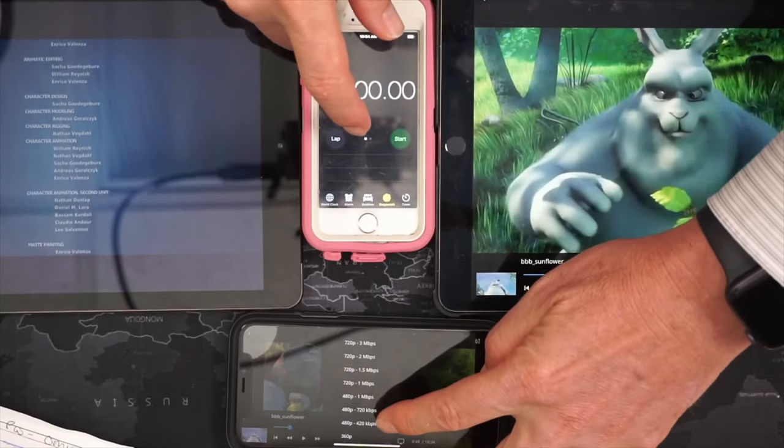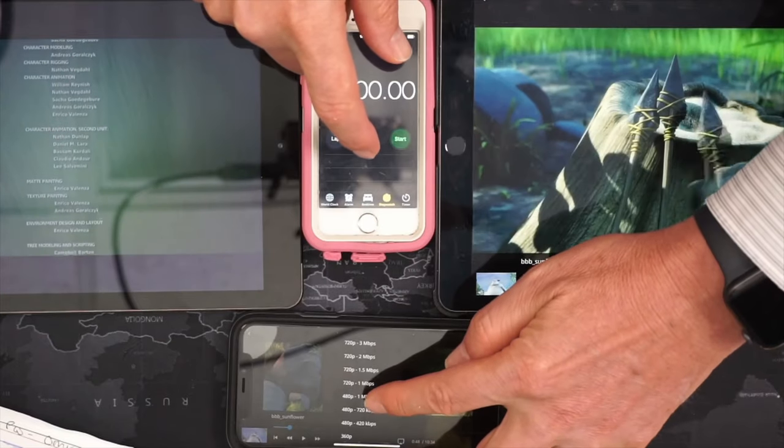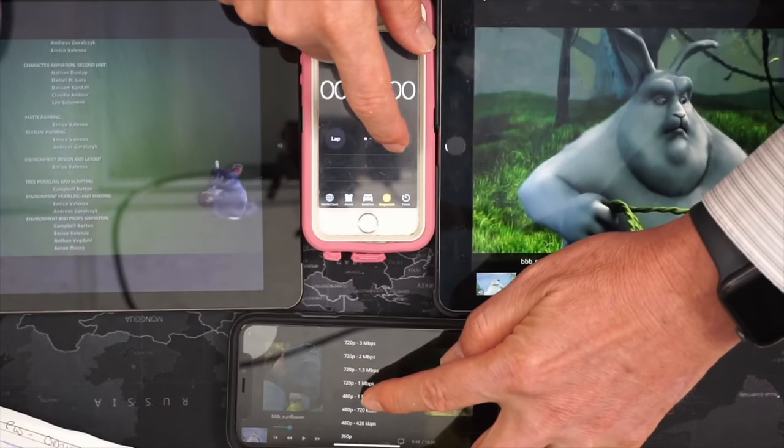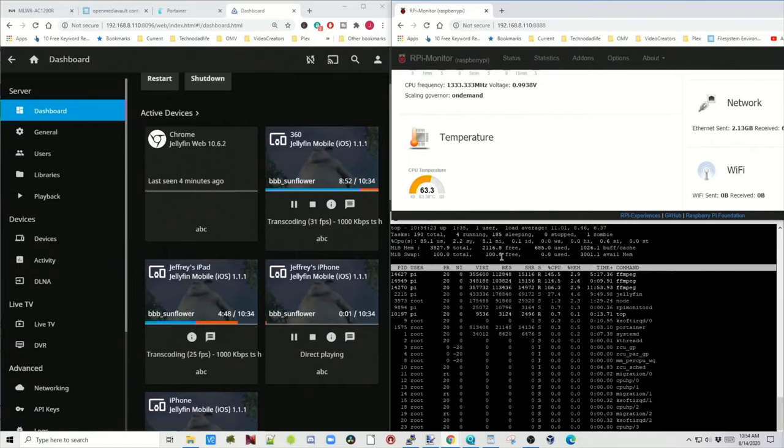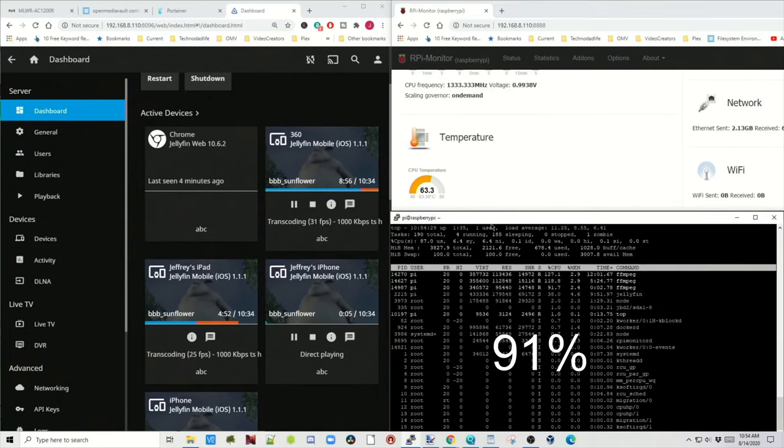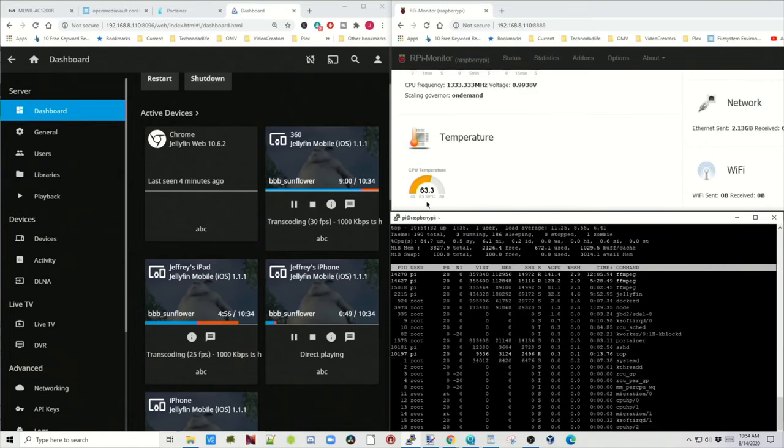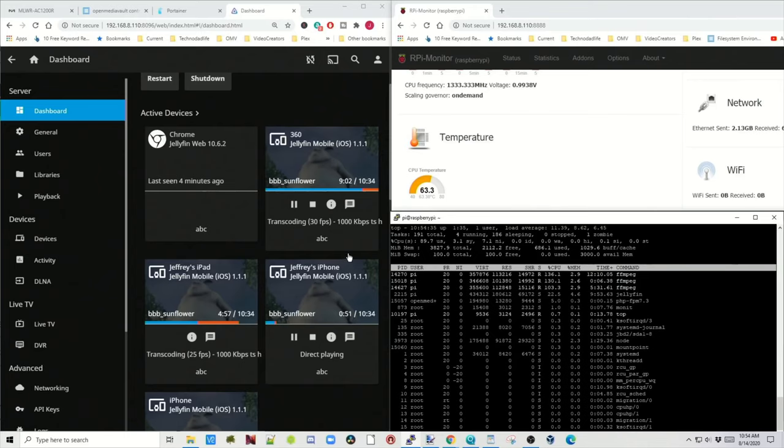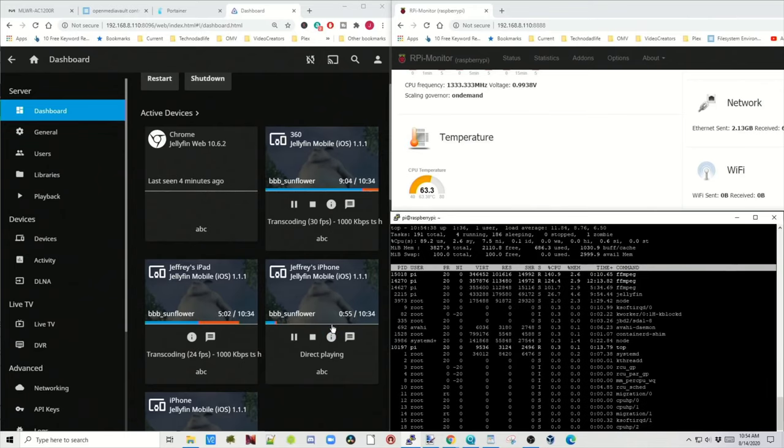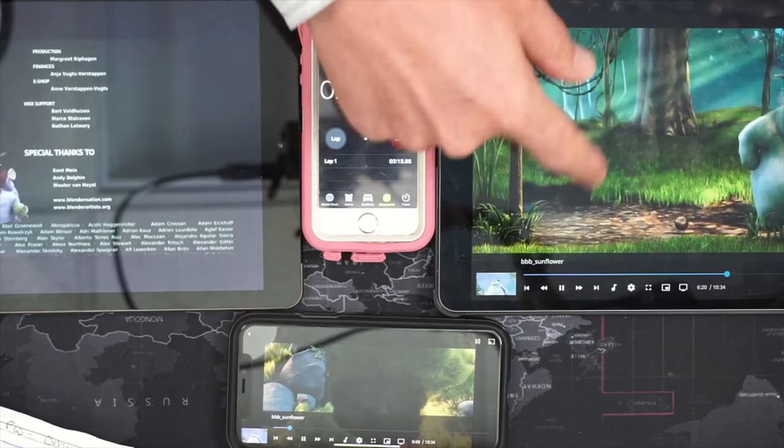So let's see if we can transcode a third one to 480p. There is 480p, one megapixel. Ready, set, go. Now if we take a look at our desktop again, CPU usage is over 90 and CPU temperature is 63, so it's going up again. It hasn't even shown that it's transcoding yet. Now all three are frozen.